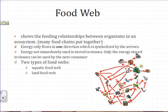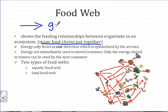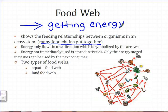A food web is similar but a little more complex. A food web shows the feeding relationships between organisms in the ecosystem. In other words, it's all the food chains in the ecosystem put together. Energy flows in only one direction, which is symbolized by the arrows — the arrows point to the organism that is getting energy. Energy is not mainly stored in tissues; only the energy stored in tissues can be used by the next consumer. So only the energy stored in the plant can get used by the rabbit, and only the energy stored in the rabbit goes to the owl, and so on.